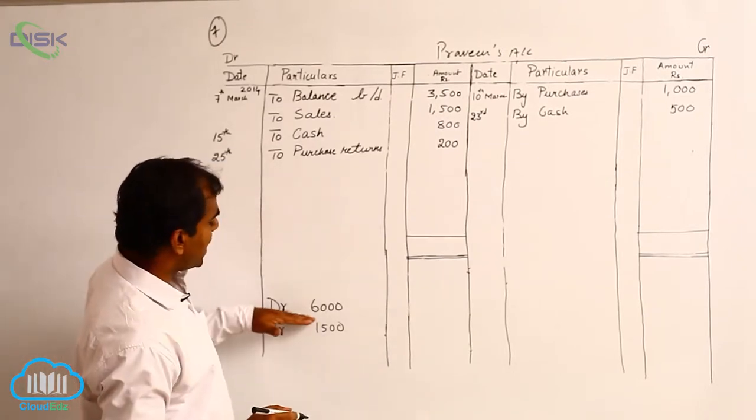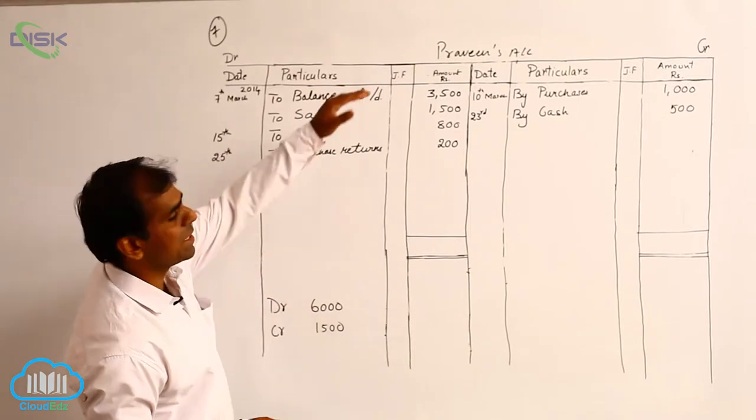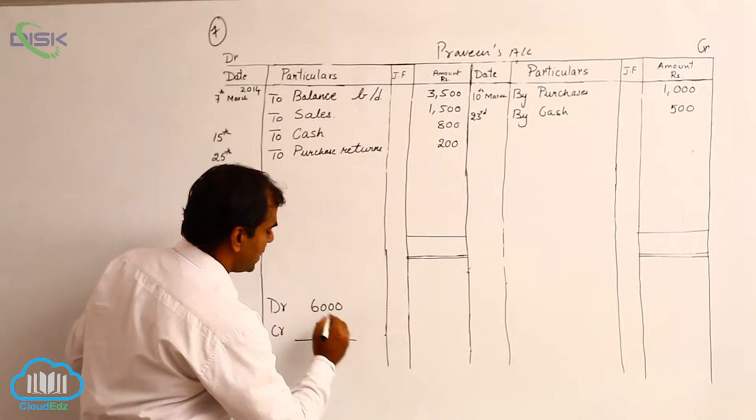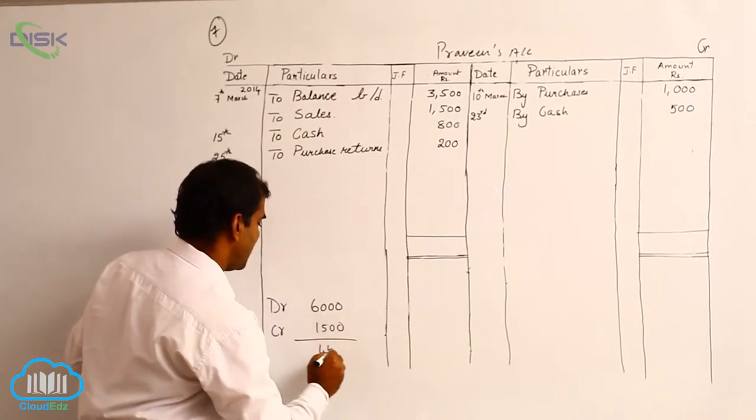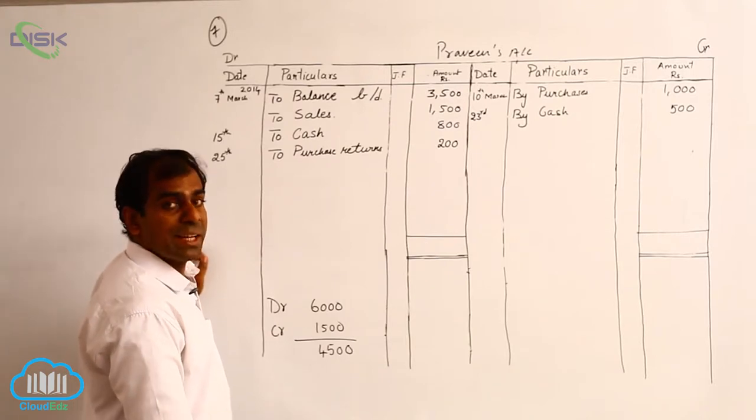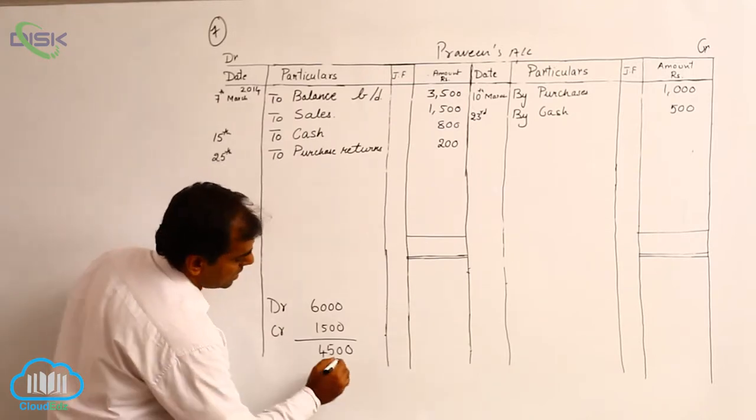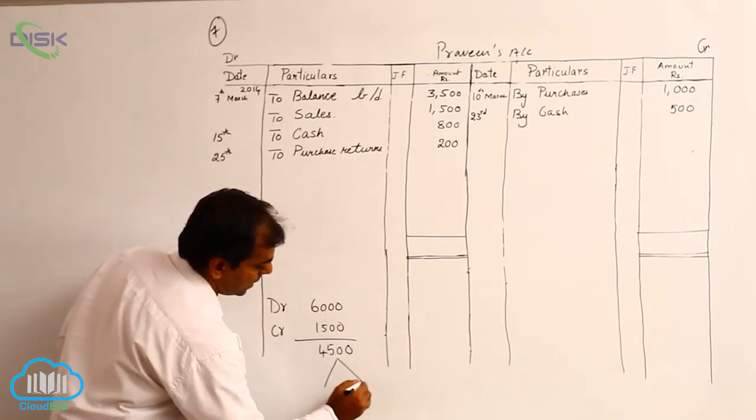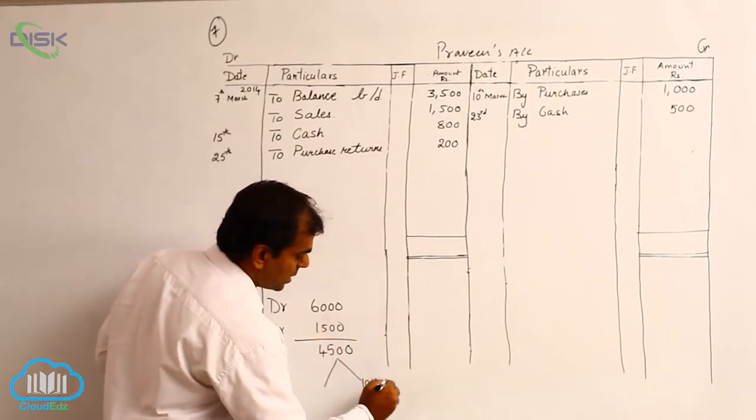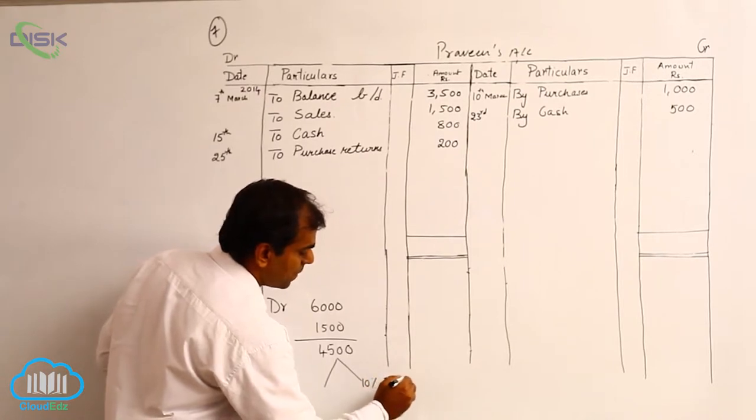If you see our debit side total is more, means Praveen has to give us money. So how much he has to give us? 4,500. We are also giving him discount, so let us split this 4,500 into discount and cash. 10% is the discount, that comes to rupees 450.